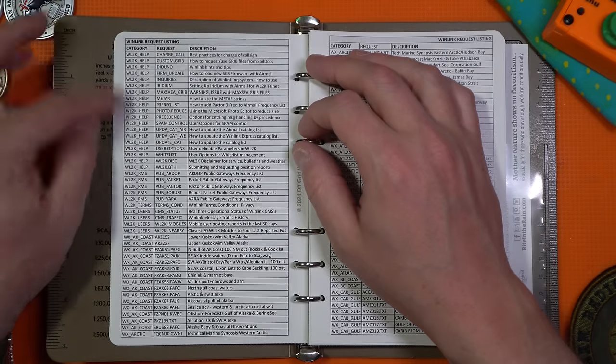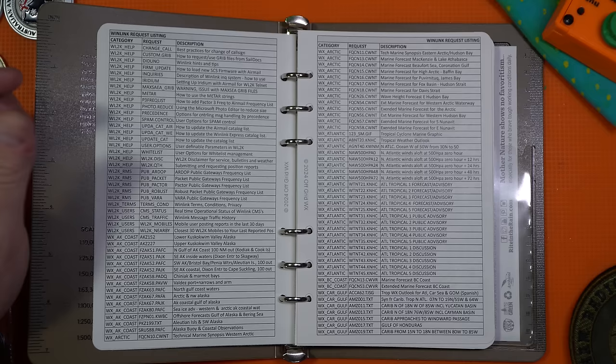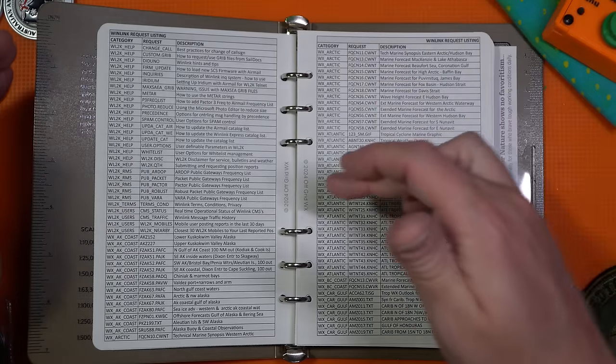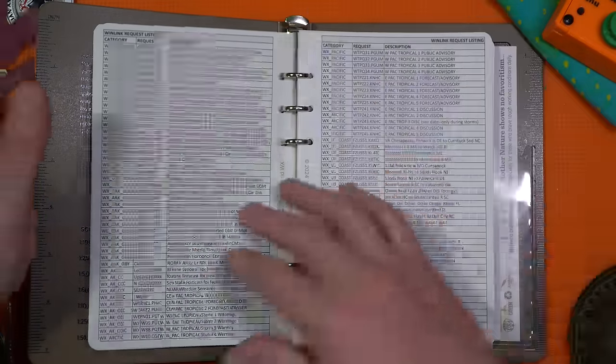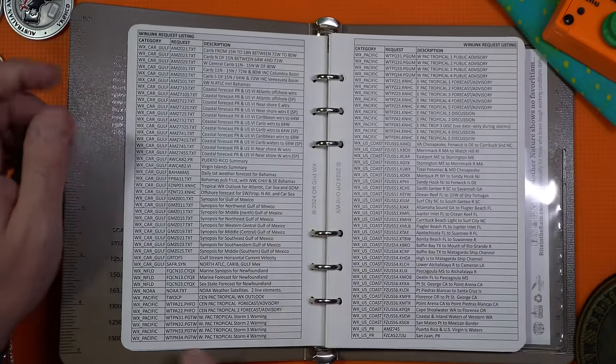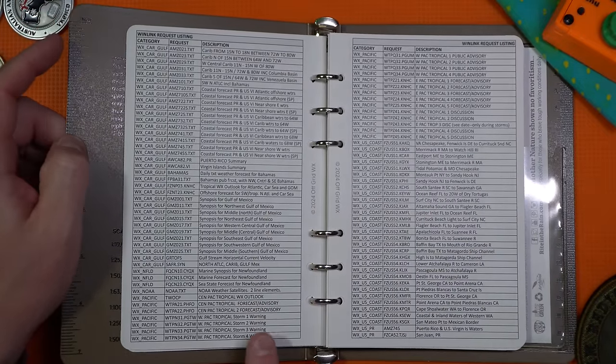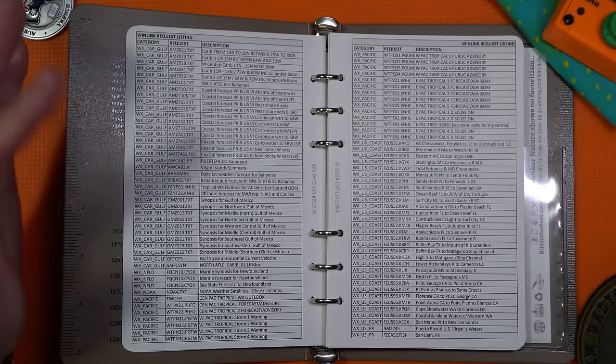There's a whole list of help listings that you can get within Winlink, as well as forecasts for the Arctic region, the Atlantic region, the Gulf Coast. Let's go down the list and see Pacific. So that's something I might want to pull up if I'm looking for any storm warnings or anything along those lines.